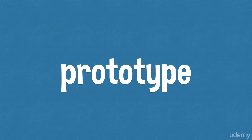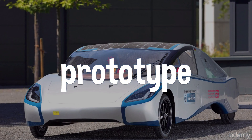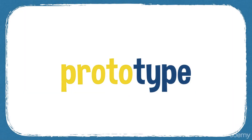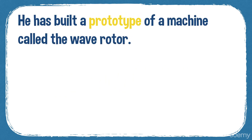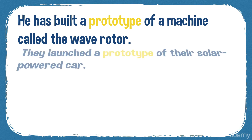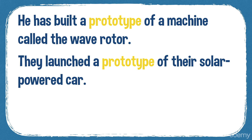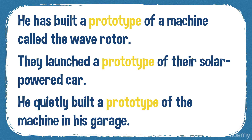The next word is 'prototype.' A prototype is a new type of machine or device which isn't yet ready to be made in large numbers and sold — it's a way to test out a new machine or device, like a test model. Here's a prototype of a beautiful car powered by solar power, built in Germany. The word 'proto' is Greek and means first, so a prototype is the first type of a machine or device. Example: 'He has built a prototype of a machine called the wave rotor.' 'They launched a prototype of their solar-powered car.' 'He quietly built a prototype of the machine in his garage.'